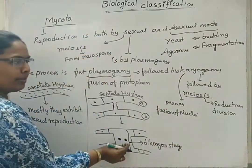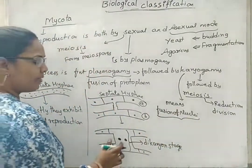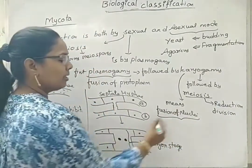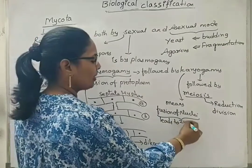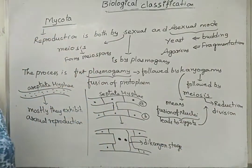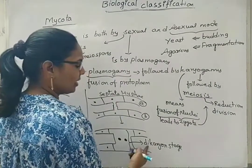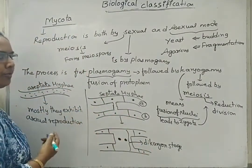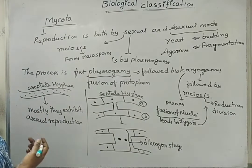Later, both nuclei will be fused — that is karyogamy. After formation, it leads to zygote formation. That zygote now undergoes meiosis to give out meiospores. So the dikaryotic stage is seen in the sexual mode of reproduction during meiospore formation.